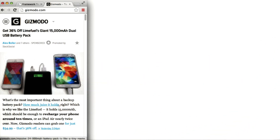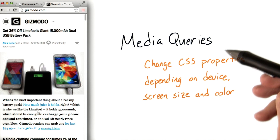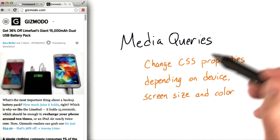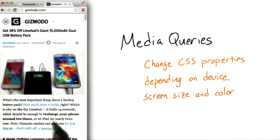The way this is accomplished is with media queries. Gizmodo used media queries to change the CSS of their page as a screen got resized. Using media queries, you can change your page's CSS depending on what type of device it is using — whether it's a mobile screen or a desktop screen — how big it is, its height and width, or even the color of screens.